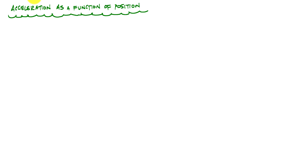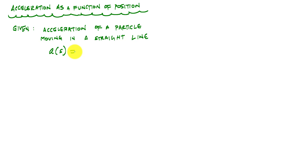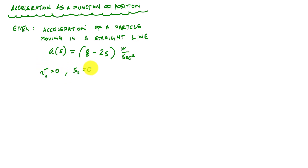We have a particle moving in a straight line, and the acceleration is described by this function. The acceleration is a function of position with units of meters per second squared — it's just a linear function, some constant minus a constant times s, where s is the position. The initial condition we have is that when the velocity is zero, the position is also zero, and that will help us answer some questions.